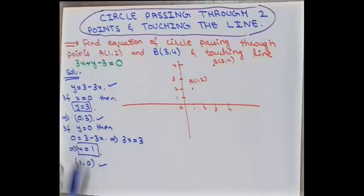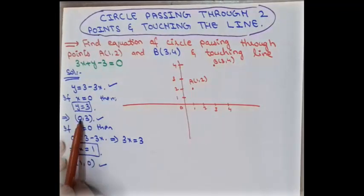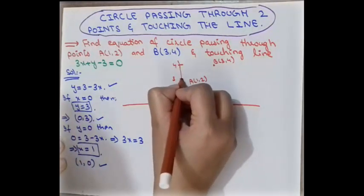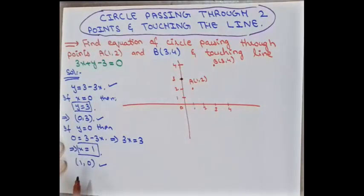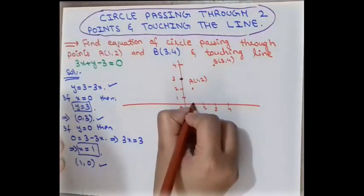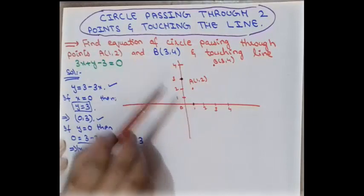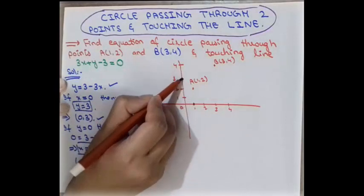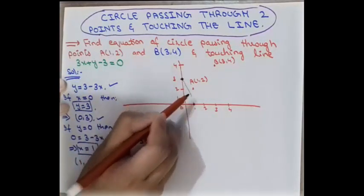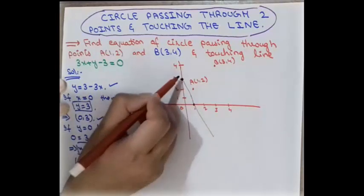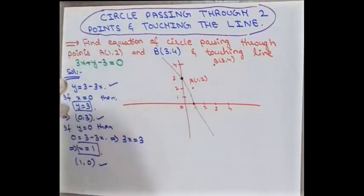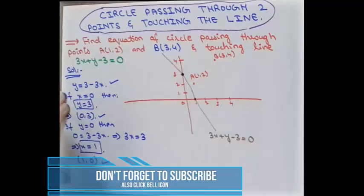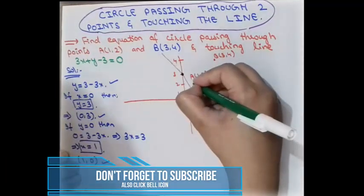We now have two points: (0, 3) — here on the y-axis there is a point 3 — and the other point (1, 0). With these two points we can easily draw the line of the given equation. We extend and join them. The line equation is 3x + y − 3 = 0.